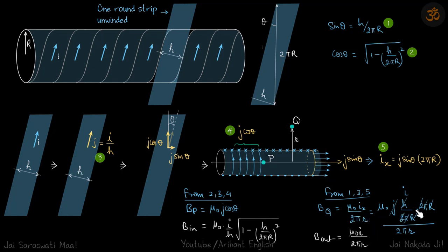B out we get as μ₀i/(2πr) which is same as if the i current was flowing in a straight wire instead of the coil. The value inside however depends on cos θ. This is our answer.